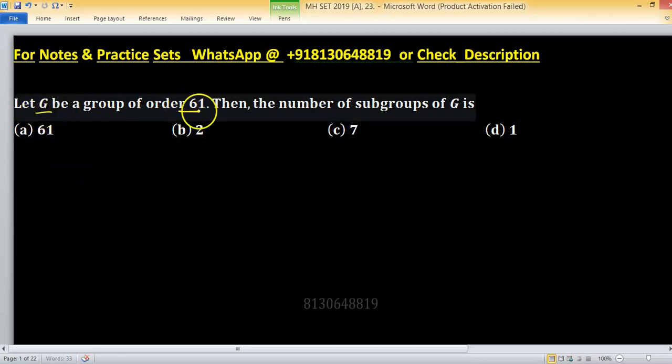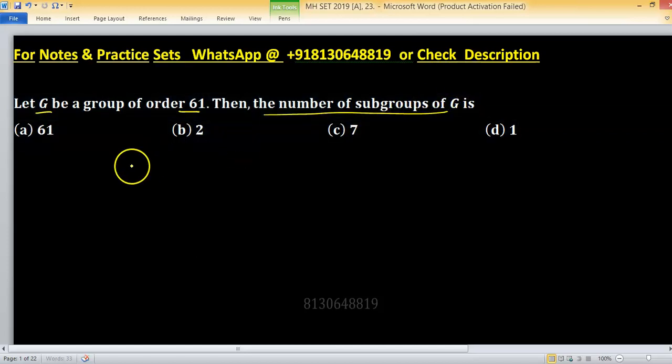Let G be a group of order 61, then the number of subgroups of G. You can find the number of subgroups with the help of tau 61. So factorize 61. Factors of 61 are 1 and 61.